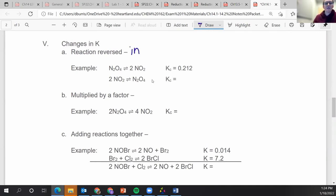So if you reverse the reaction, you get the inverse of K. That would mean 1 over K, right? So the K of this equation, which is the reverse of this one, is 1 over 0.212.